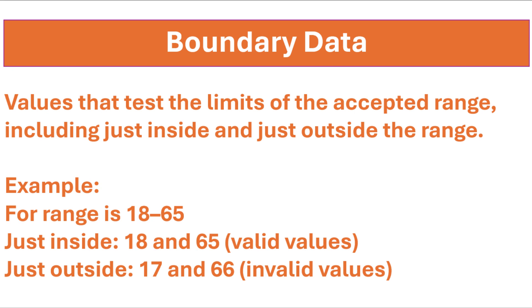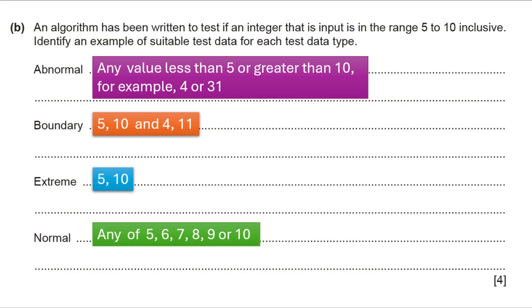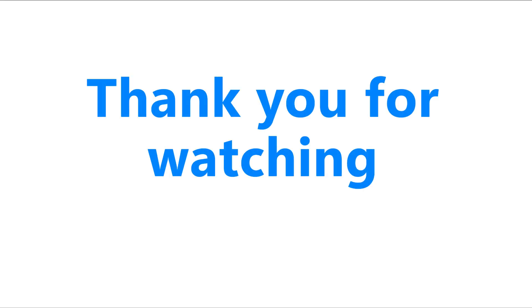Lastly, boundary data — values that test the limits of the accepted range, including just inside and just outside the range. For example, for a range from 18 to 65, just inside values 18 and 65 are valid, and just outside values 17 and 66 are invalid. For our question, 5 and 10 are just inside the range, and 4 and 11 are just outside the range. So our boundary test data will be 5, 10, 4, and 11. That's it — we have solved the question!